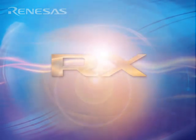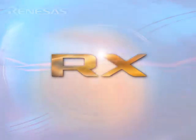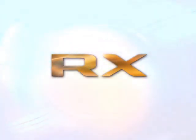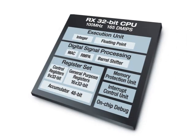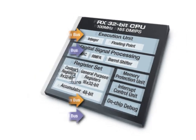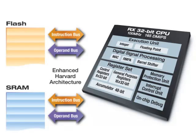In other words, with RX, it is possible to obtain performance without sacrifice. The 32-bit RX central processing unit uses an enhanced Harvard bus, with separate instruction and operand buses going to both Flash and SRAM.